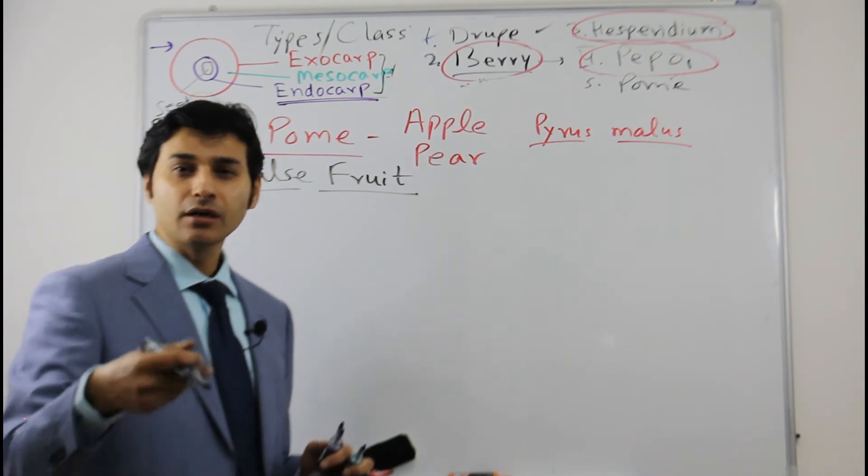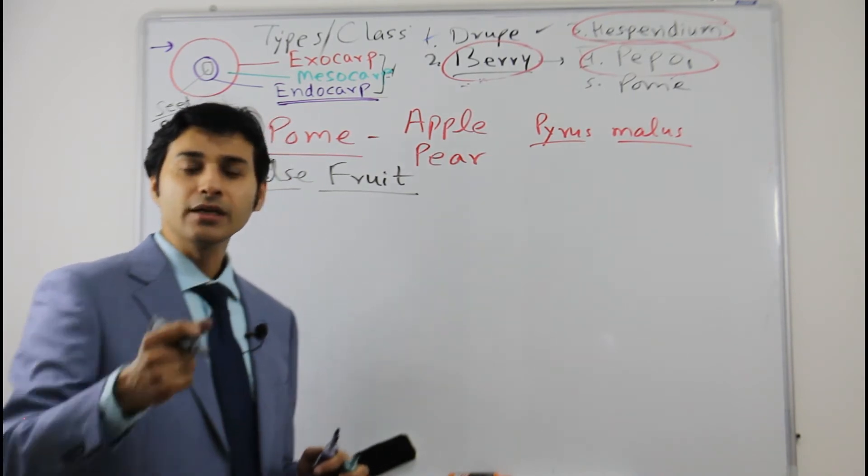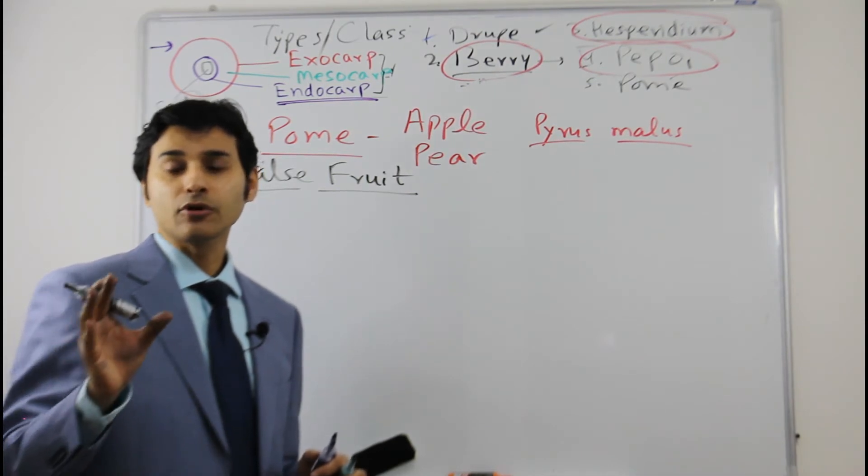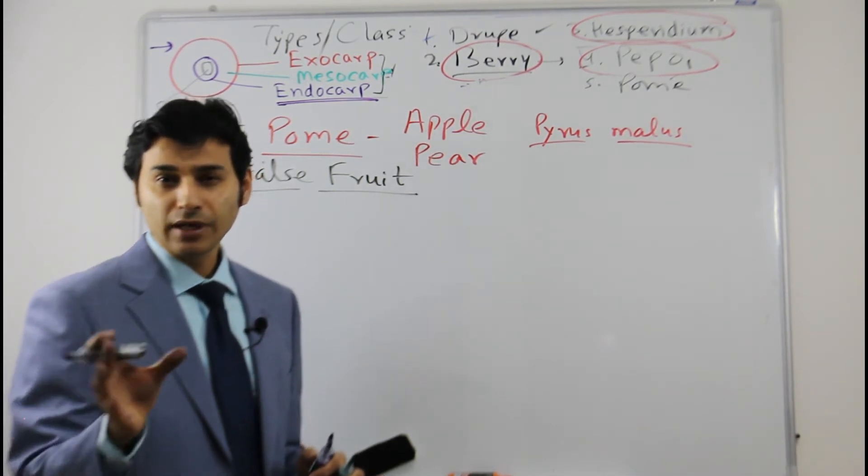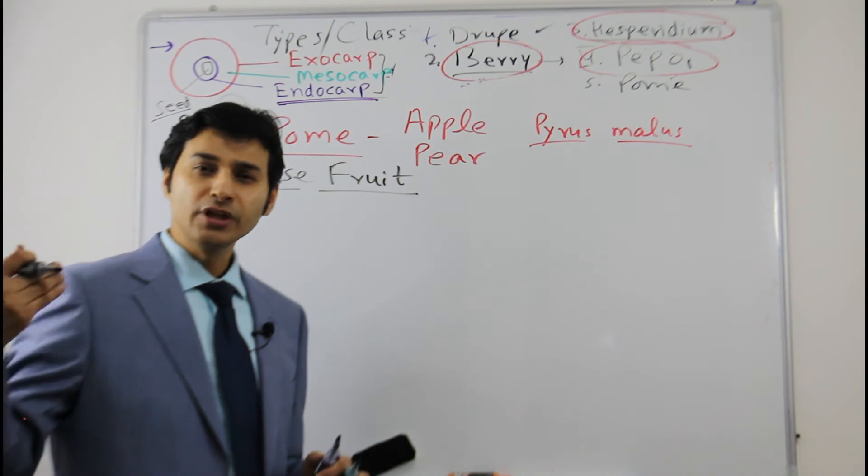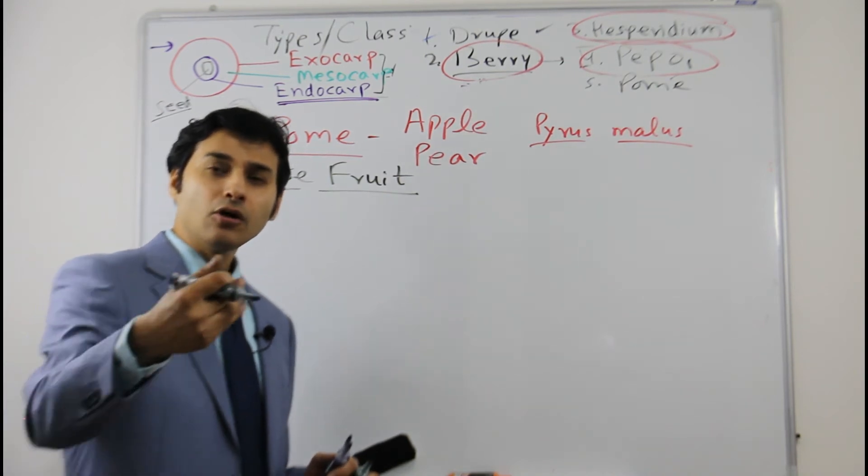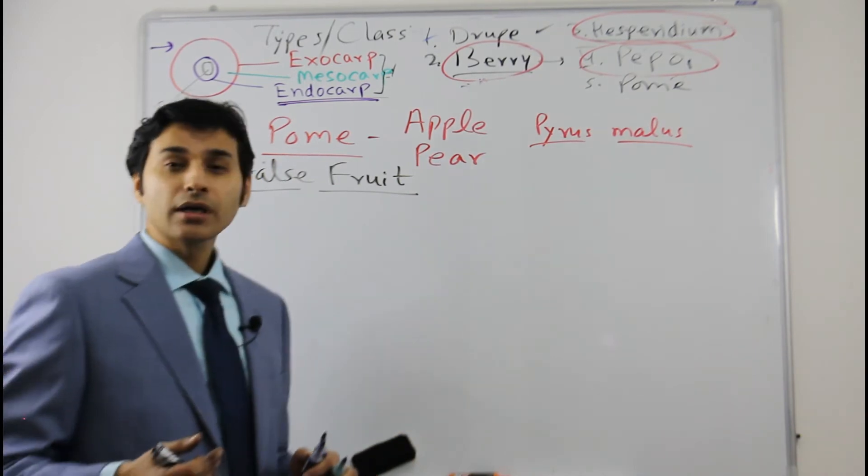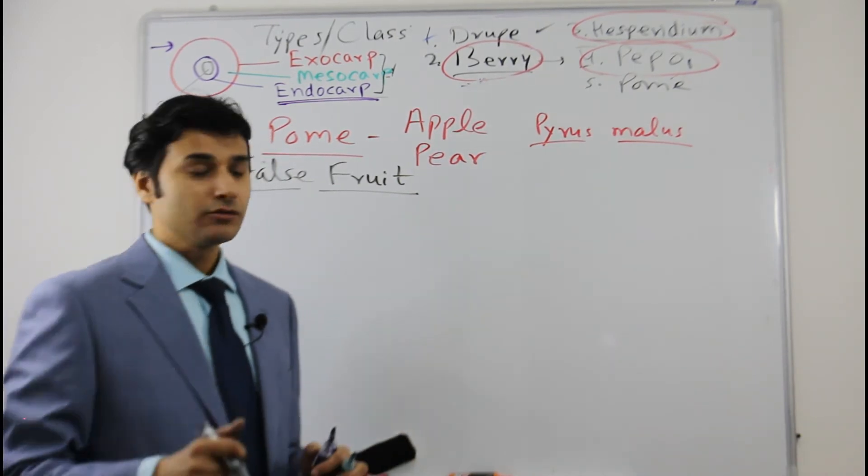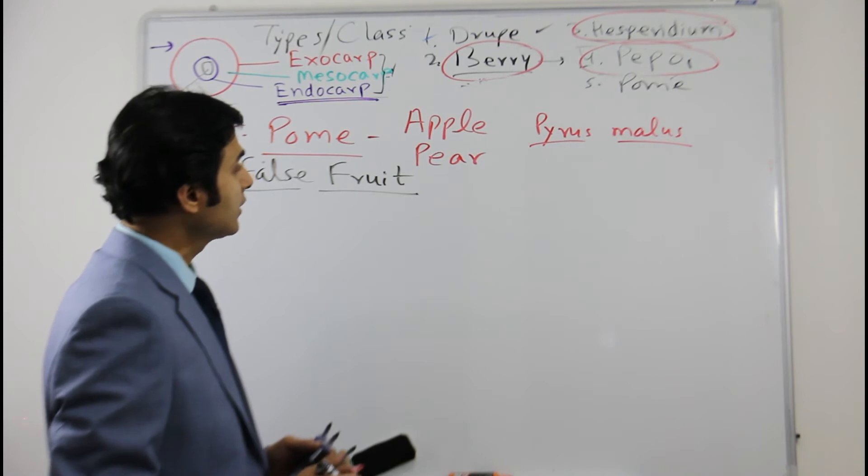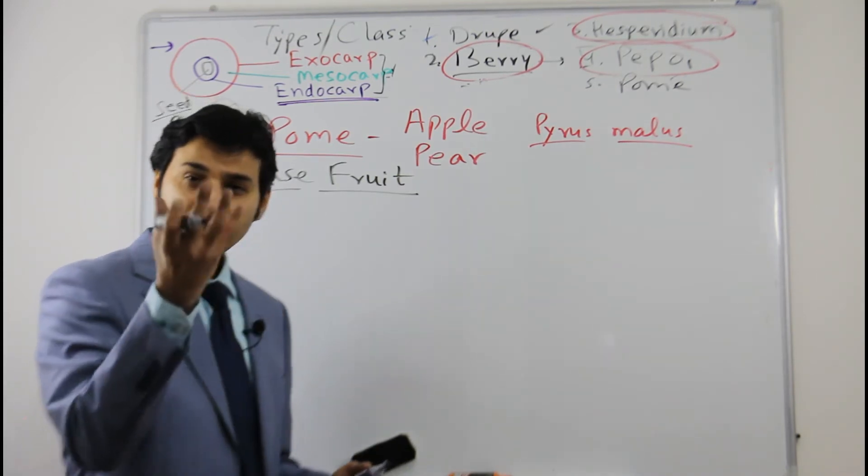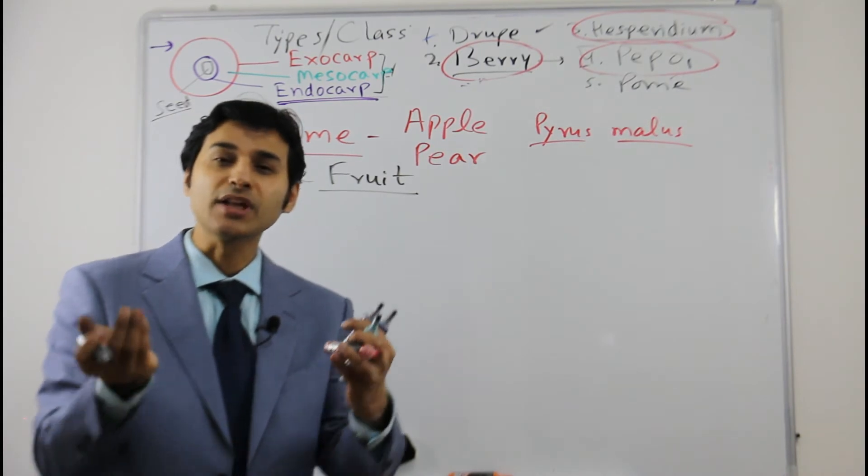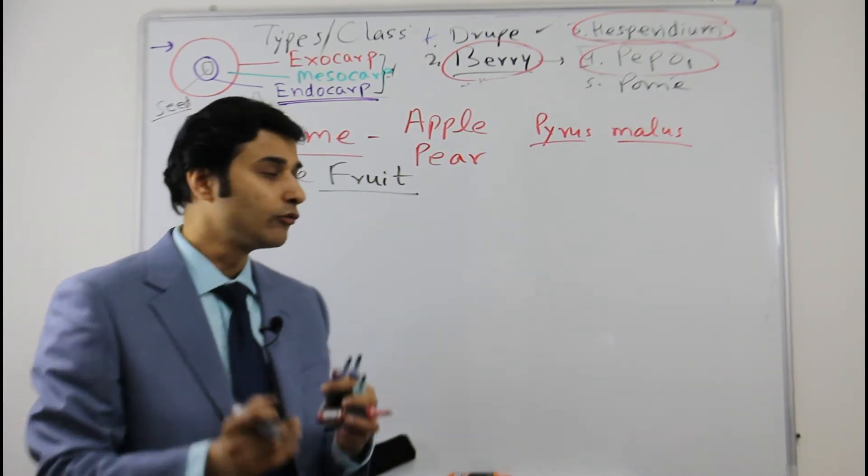I have discussed this in my earlier videos about flower where I discussed about the types of flowers or ovaries: superior ovary, inferior ovary, or half inferior ovary. So basically this apple comes under inferior ovaries. The ovary here is inferior. Now when the ovary is inferior, that means ovary is sunken inside and the thalamus is cup-like which covers the entire ovary.